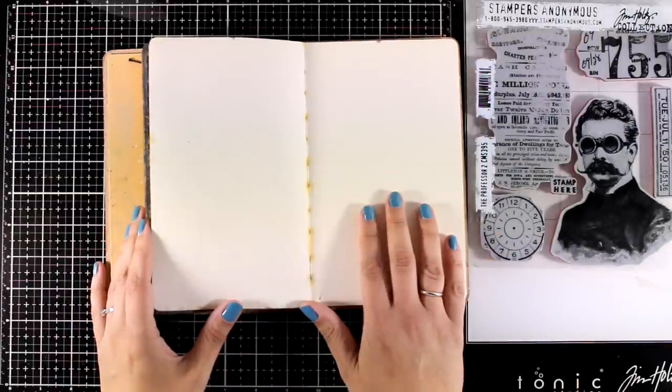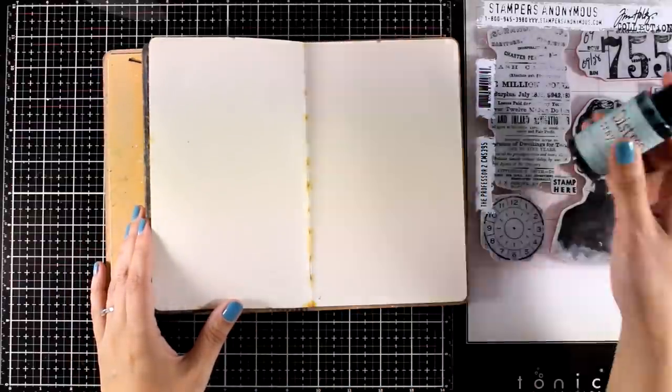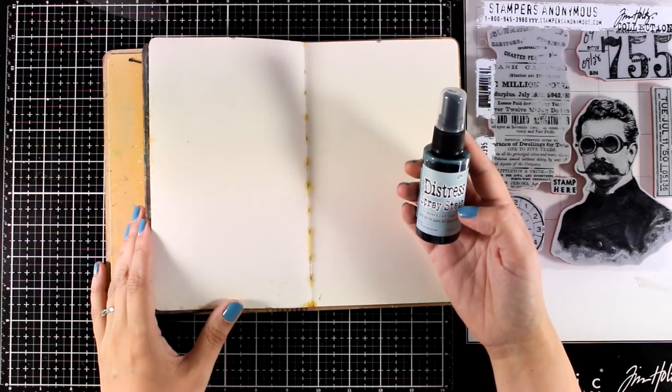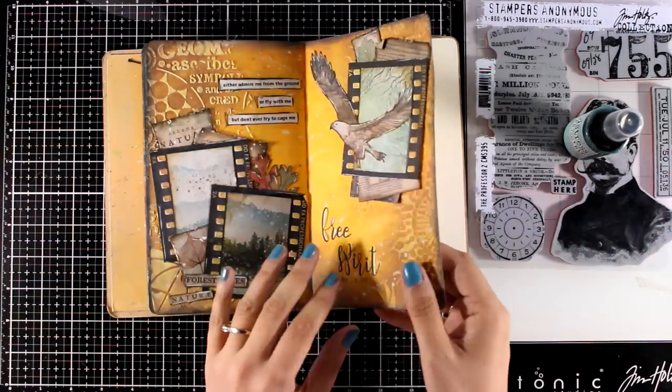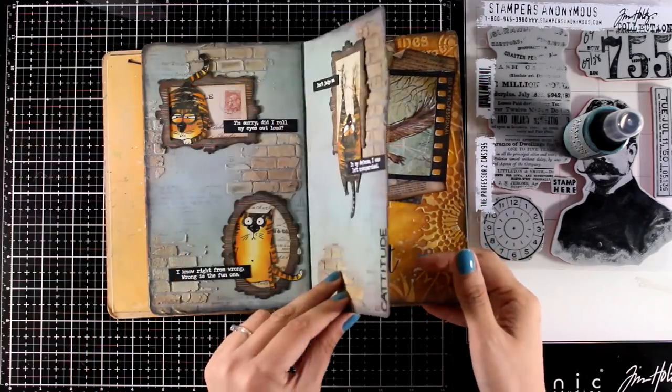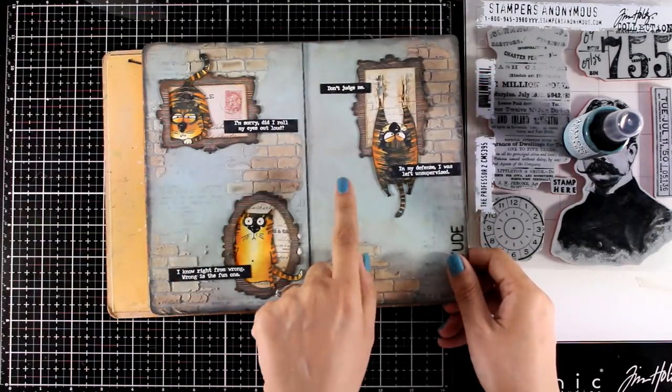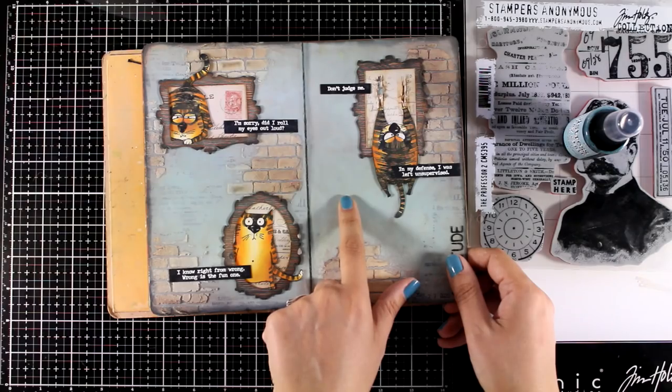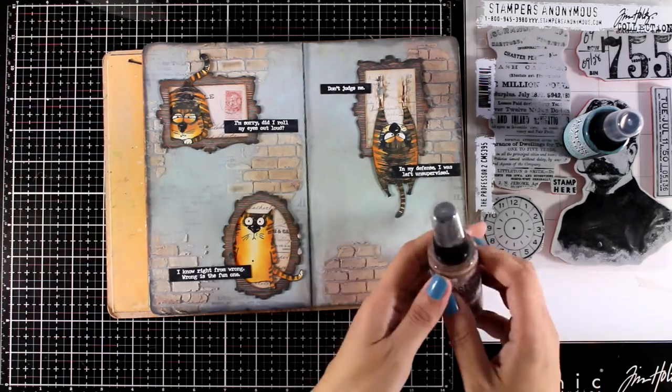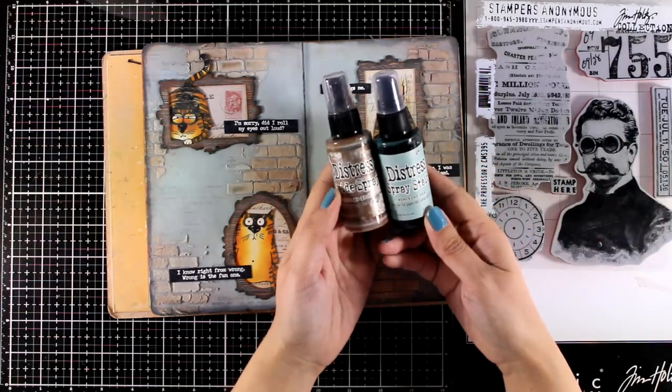I will be working on my Delusions art journal and I'm going to experiment today. I will play with my Distress Spray Stain and combine it with Distress Oxide Spray just to see what I get. I will be using the exact same color combo like this page where I used Vintage Photo and Speckled Egg.